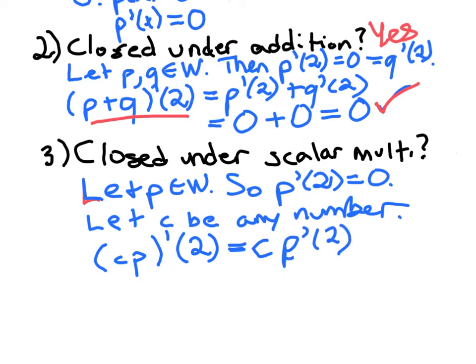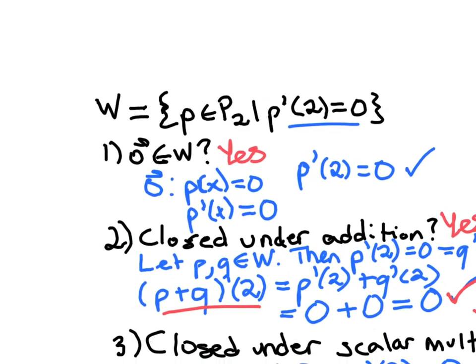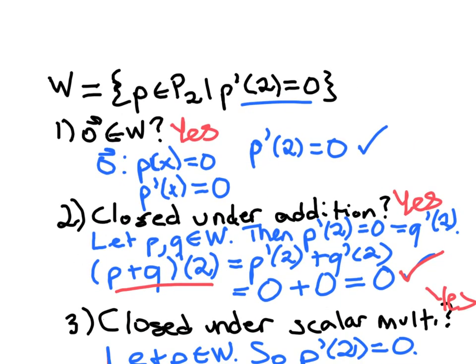But the derivative of P at 2 is 0 times any number C, but any number times 0, that's going to be 0. So yes, the derivative of this new function, C times P at 2 is 0. So yes, W is closed under scalar multiplication. And so if I scroll up, yes, this thing is a subspace.